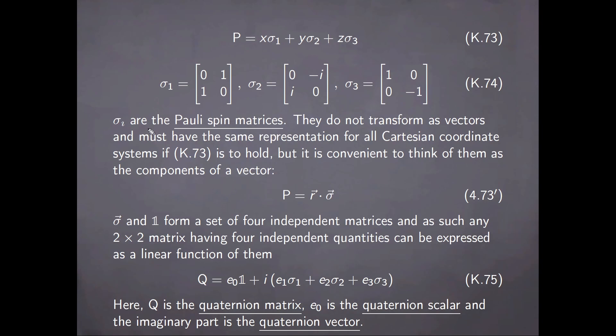This set of matrices together with the identity matrix in two dimensions form a set of four independent matrices. And as such, any two-dimensional matrix having four independent quantities can be expressed as a linear function of them. In particular, it can be written in this way, where in older branches of mathematics, sometimes Q is identified as the quaternion matrix. E0 becomes the quaternion scalar and the imaginary part is the quaternion vector.